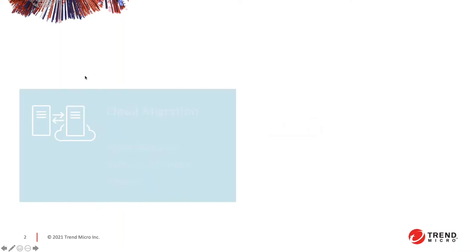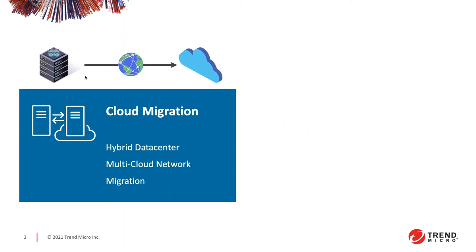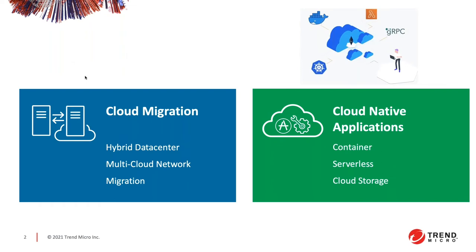The first piece here is mentioning the three major cloud builders. Every time we talk about cloud migration, it's very common to think about shift and lift — grabbing regular virtual machines or physical servers and migrating them to the cloud. But you also have hybrid data centers, multi-cloud infrastructure, and regular monolithic migration of apps.